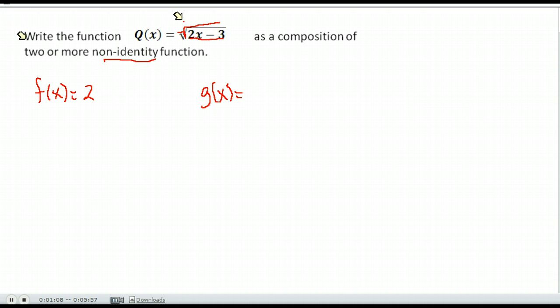So I'm thinking that we took the square root of just a regular function. So the inside here can be my f of x. Let's put f of x to be 2x minus 3, and g of x can be what happened to that f of x. What happened to it is we took the square root of it.